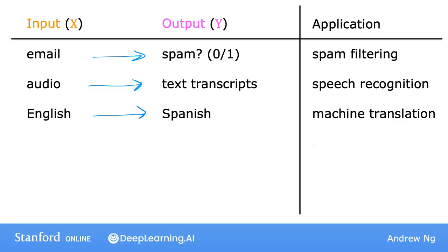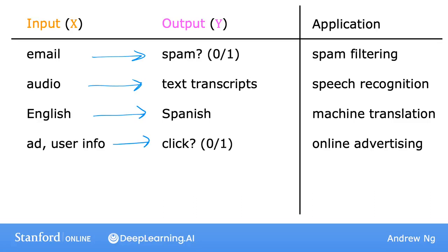The most lucrative form of supervised learning today is probably used in online advertising. Nearly all the large online ad platforms have a learning algorithm that inputs some information about an ad and some information about you, and then tries to figure out if you will click on that ad or not. Because by showing you ads that you're slightly more likely to click on, every click is revenue. This actually drives a lot of revenue for these companies — maybe not the most inspiring application, but it certainly has a significant economic impact.